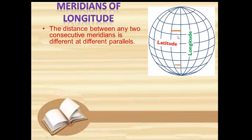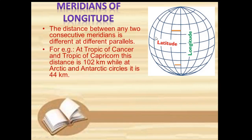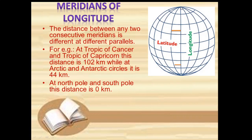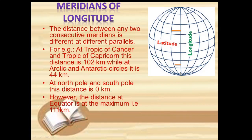The distance between any two meridians is different at different parallels as well. When I compare the parallels and longitudes, the distance is entirely different — it is not the same. At Tropic of Cancer, the distance between consecutive meridians is 111 kilometers — wait, not 2 kilometers. On the Arctic and Antarctic, it is 44 kilometers. At the north pole and south pole — the tip where the perpendicular prime meridian meets — it is just 0 kilometers. And the distance at the equator is at the maximum, that is 111 kilometers.